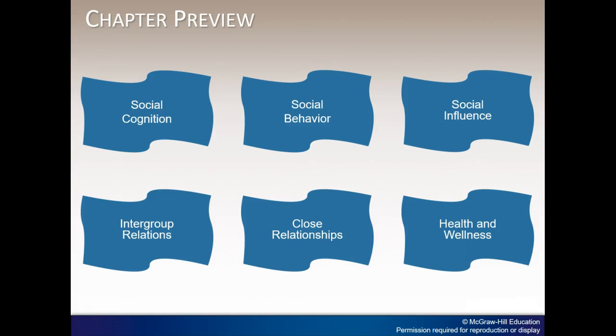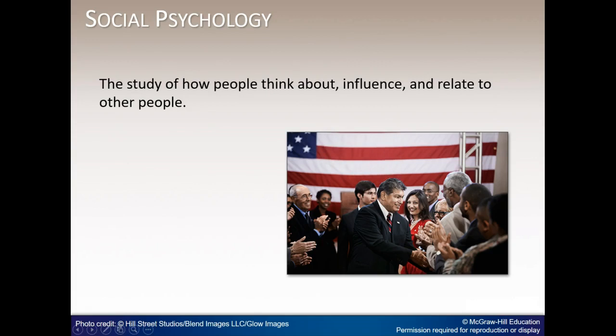Children who are born without fingers or lose limbs through accidents might have to endure teasing and stares. But a group of strangers armed with 3D printers have tried to help these children by creating inexpensive prosthetics. The ways that people have come together to solve problems, interact, and form bonds with one another is the subject of social psychology — the study of how people think about, influence, and relate to other people. Social psychologists typically focus on situational factors that lead to behavior and are interested in how a person's thoughts, feelings, and behavior are influenced by the actual or imagined presence of others.